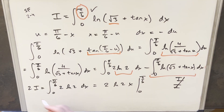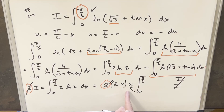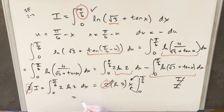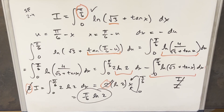Dividing both sides by two, the twos cancel and we plug in zero to get zero. So our final solution is I equals pi over six times the natural log of two. That's it — I thought that was a really good problem, pretty interesting. Thanks everyone for watching, have a great day.